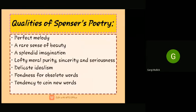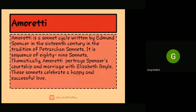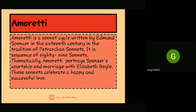Amoretti is a sonnet cycle written by Edmund Spenser, who is known as the poet's poet, a title coined by Charles Lamb. This Amoretti was written in the 16th century in the tradition of Petrarchan sonnets. It was first published in 1595 in London by William Ponsonby. This sonnet is a sequence of 89 sonnets.